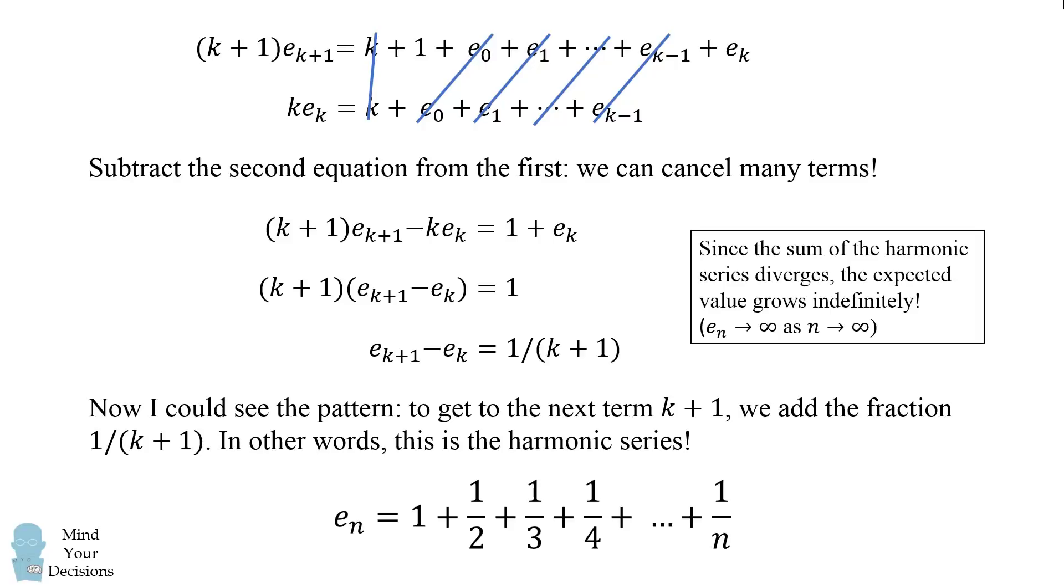As an interesting tidbit, since the sum of the harmonic series diverges, the expected value grows indefinitely. e_n goes to infinity as n goes to infinity. Did you figure it out?